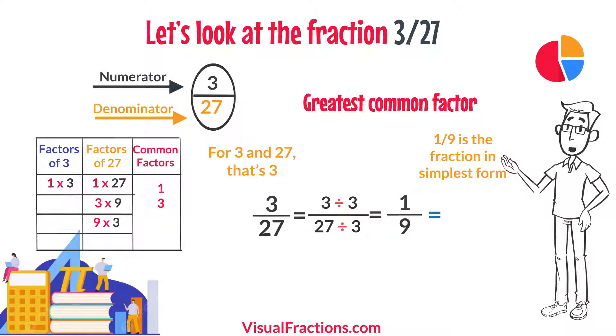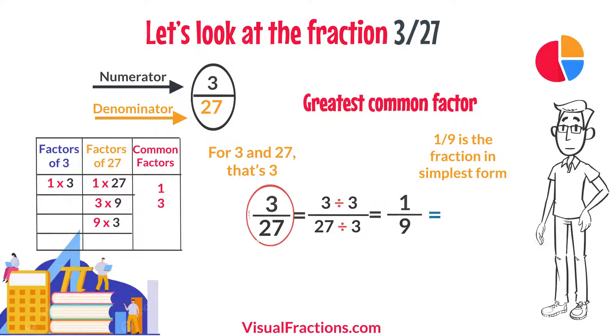It's important to note that both the original fraction 3 27ths and the simplified fraction 1 9th have the same decimal value, which is approximately 0.1111. This shows that although their appearance may change, their value remains consistent.